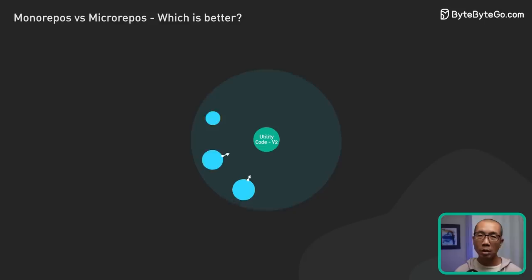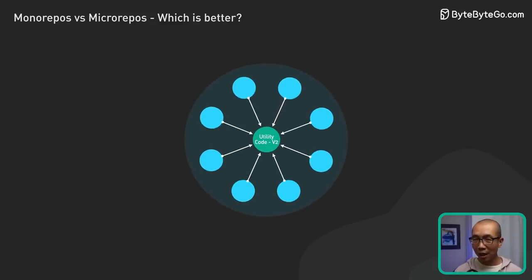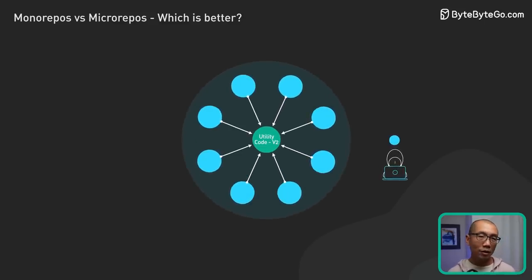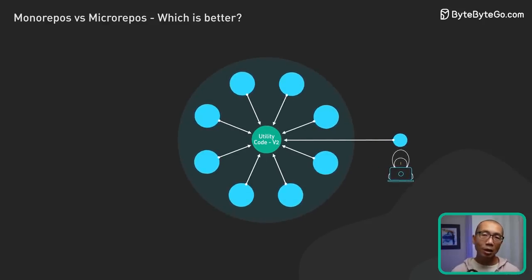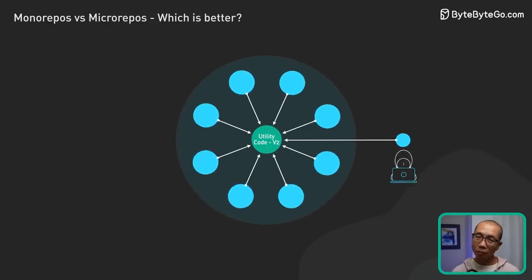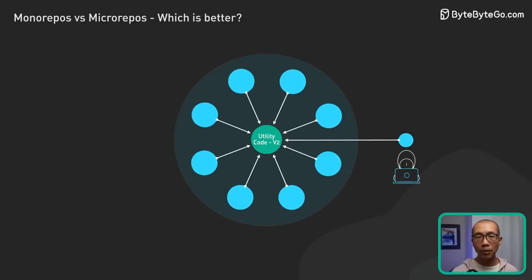And don't forget code reuse. Need a functionality that's already been developed for another service? No need to recreate the wheel. We can see everything in the monorepo, making it straightforward to repurpose code.